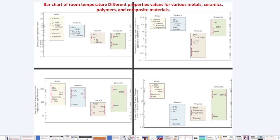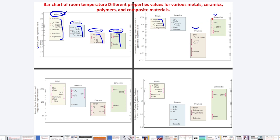The summary chart presents four properties at room temperature for metals — including tungsten, iron, titanium, aluminum, and magnesium — ceramics, polymers, and composites. Composites show stiffness roughly equal to ceramics and metals, while polymers have the least strength. Here you can see which material has the highest density or strength and which has the lowest, helping engineers make informed material selection decisions.